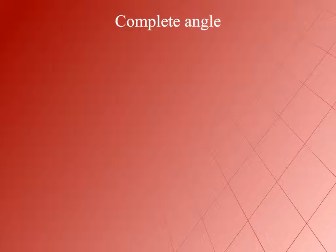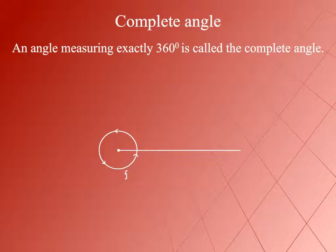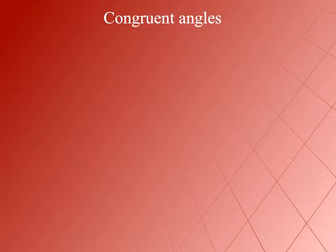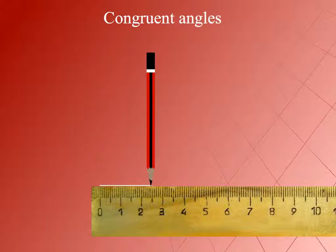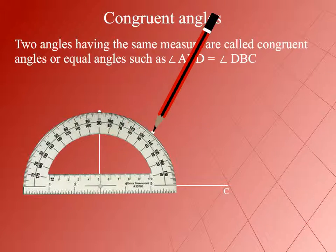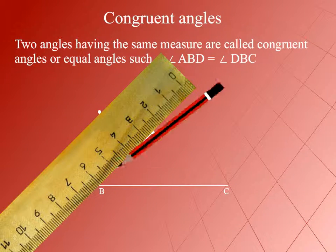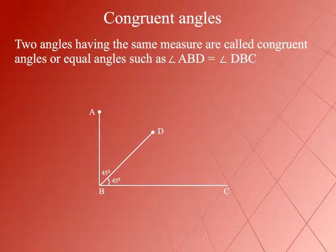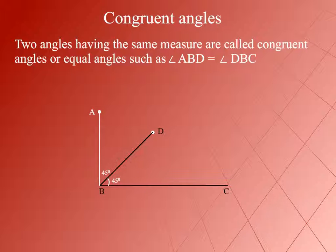Complete Angle. An angle measuring exactly 360 degrees is called the complete angle. Here, Angle F is a complete angle. Congruent Angles: Two angles having the same measure are called congruent angles or equal angles, such as Angle ABD is equal to Angle DBC.